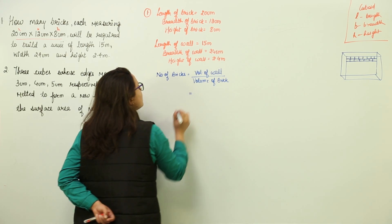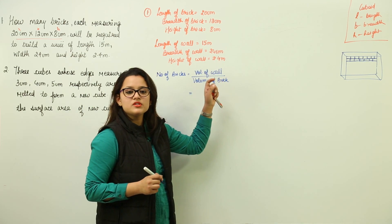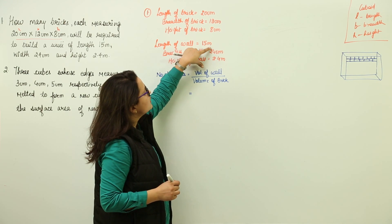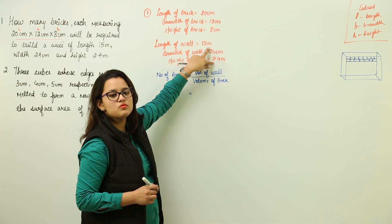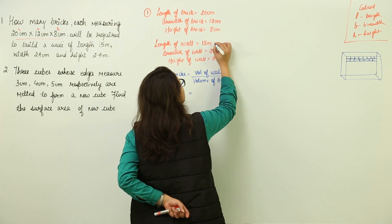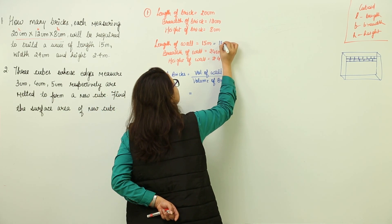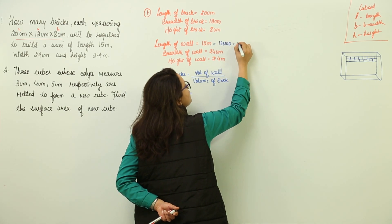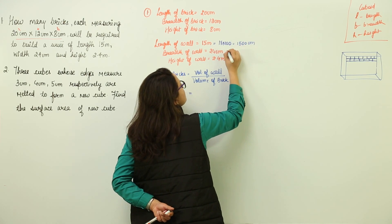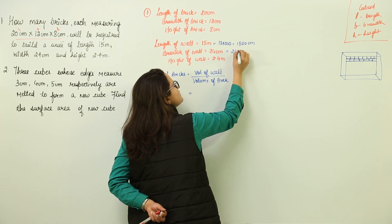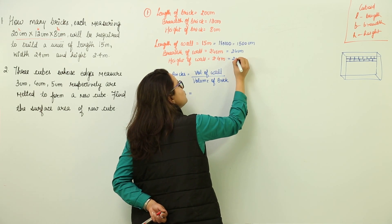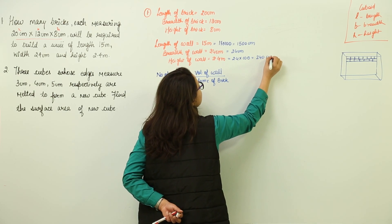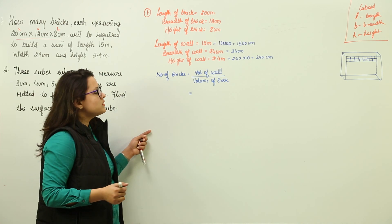Now we have the values, but are they in the same measuring units? Let us check. The brick dimensions are all in centimeters, but the wall has meters and centimeters. So we need to convert the wall's meter values to centimeters. 15 meters = 1500 centimeters; 24 centimeters stays as is; and 2.4 meters = 240 centimeters. Now all units are in centimeters.